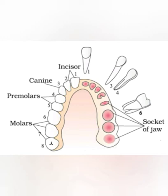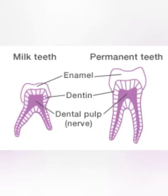Molars are basically used for both grinding and chewing. You can see all four types of teeth in this diagram. As we all know, teeth grow twice in human beings.